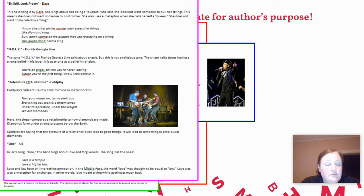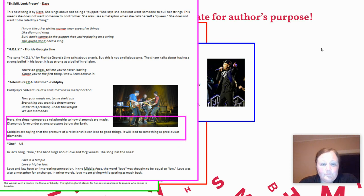One, U2. In U2's song One, the band sings about love and forgiveness. The song has the lines: love is a temple, love a higher law. Love and law have an interesting connection. In the Middle Ages, the word love was thought to be equal to law. Love was also a metaphor for exchange. In other words, love meant giving while getting as much back. So I'm going to put a box around the paragraph: Here the singer compares a relationship to how diamonds are made, because that's going to support the main idea of the text.